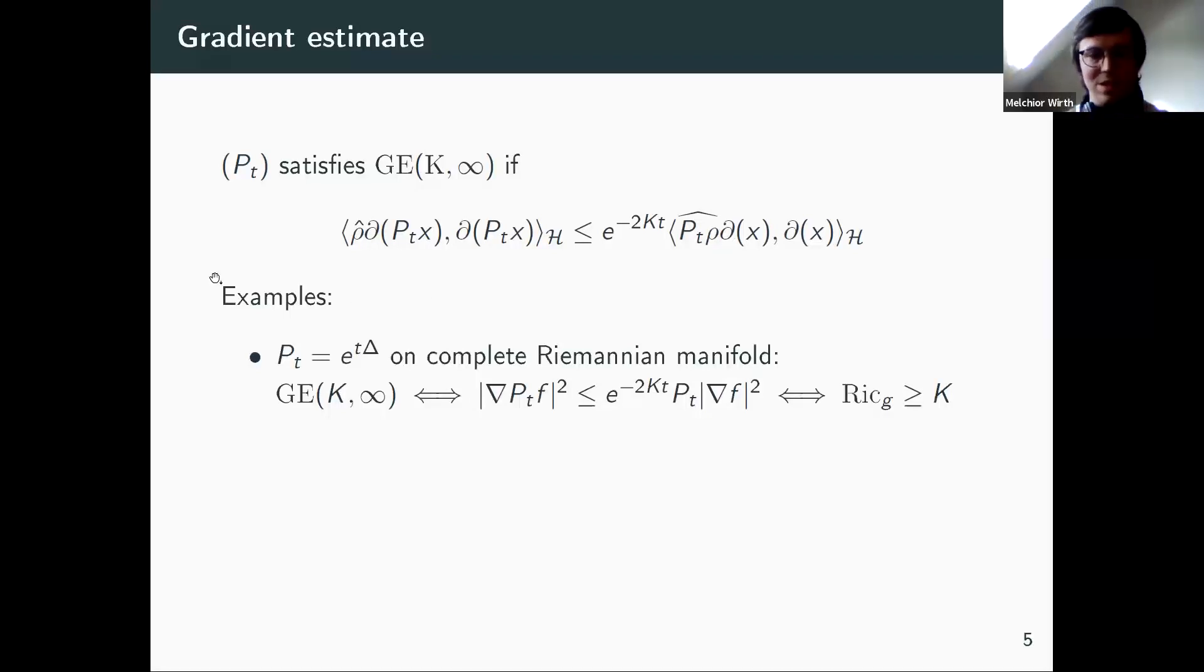First and foremost, again, we look at the heat semi-group. Now R^d is not so super interesting, but let's look at it on a complete Riemannian manifold. In this case, this ρ-hat operator is actually linear in ρ. Then I can formulate this as a pointwise estimate, which I wrote in the next line. And this estimate is actually very classical. This goes back to Bakry and Émery. And they showed that on a complete Riemannian manifold, this is satisfied if and only if the Ricci curvature is bounded below by K. So in this sense, you can also understand this gradient estimate as a non-commutative Ricci curvature bound for my QMS.